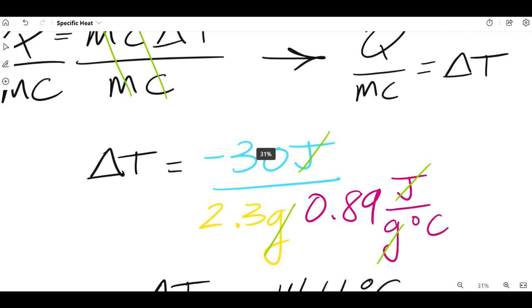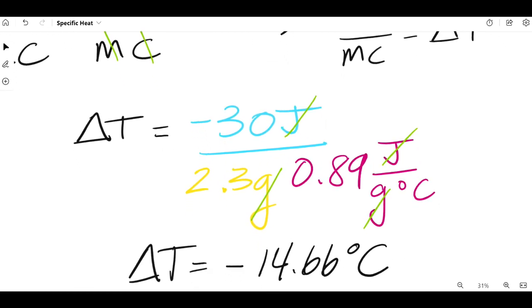So, when we put all of this in our calculator, and I would advise multiplying the 2.3 times the 0.89 first, and then dividing negative 30 by that. And you can see in green that I'm keeping track of the units, and all the units are going to cancel out except for the degrees Celsius, which would make sense because we are solving for a change in temperature. So, temperature is usually measured in degrees Celsius. Obviously, it can also be measured in things like Kelvins or degrees Fahrenheit. But for this problem, it's degrees Celsius. So, we wouldn't want the joules or the grams to be hanging around in our answer. So, it's great that they cancel out in this way. When all that is put into the calculator, we find that the delta T is negative 14.66 degrees Celsius.